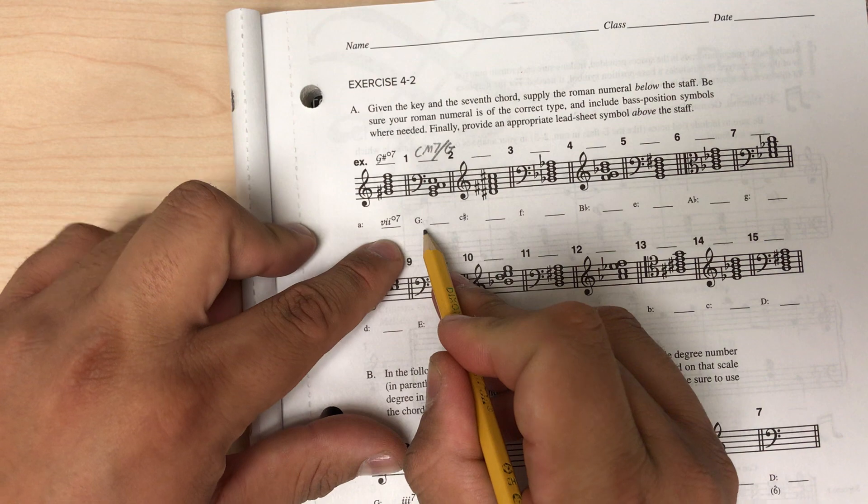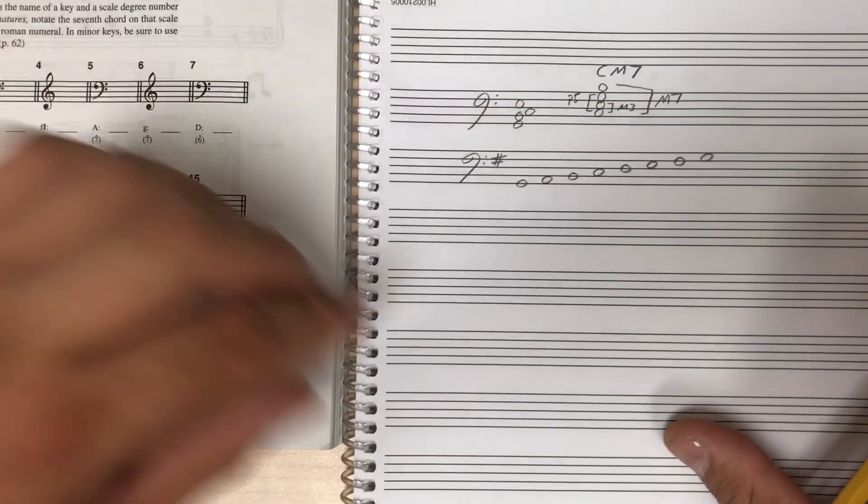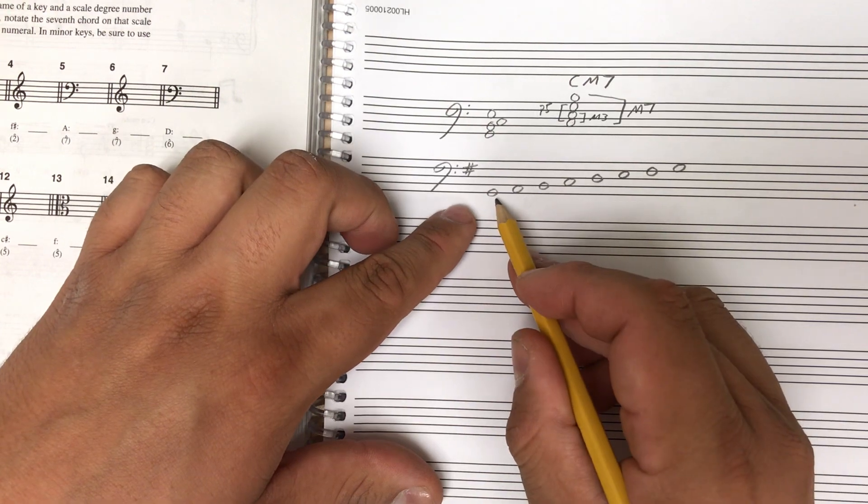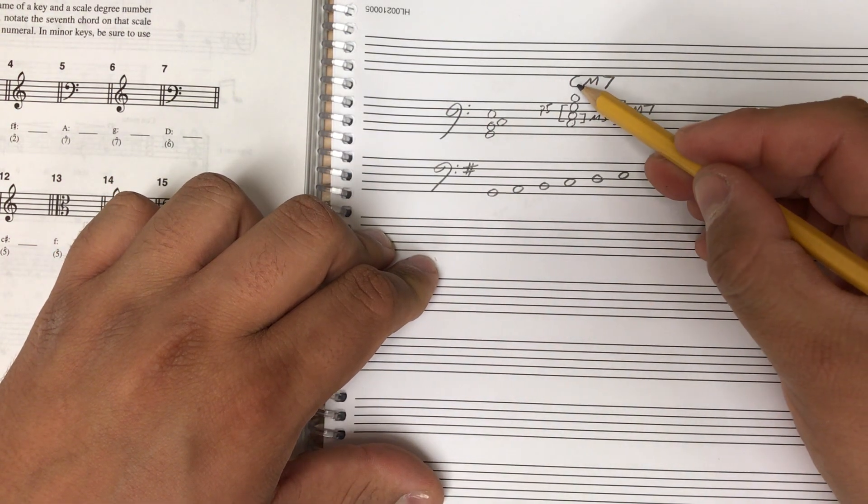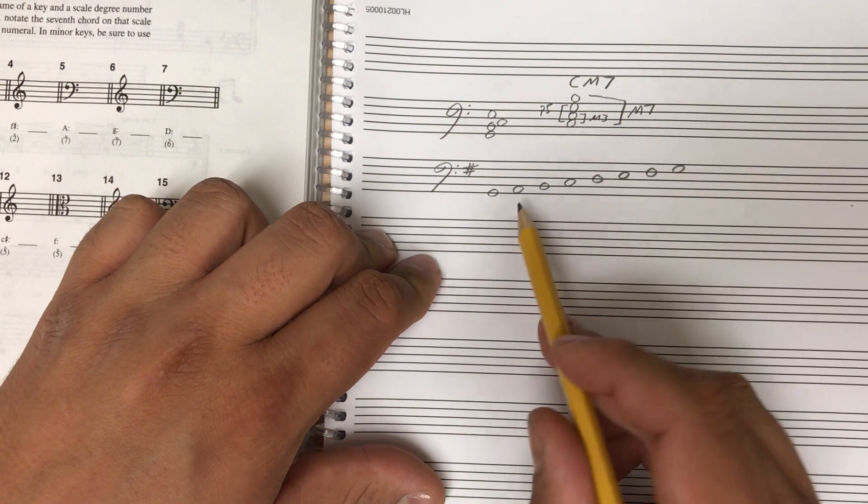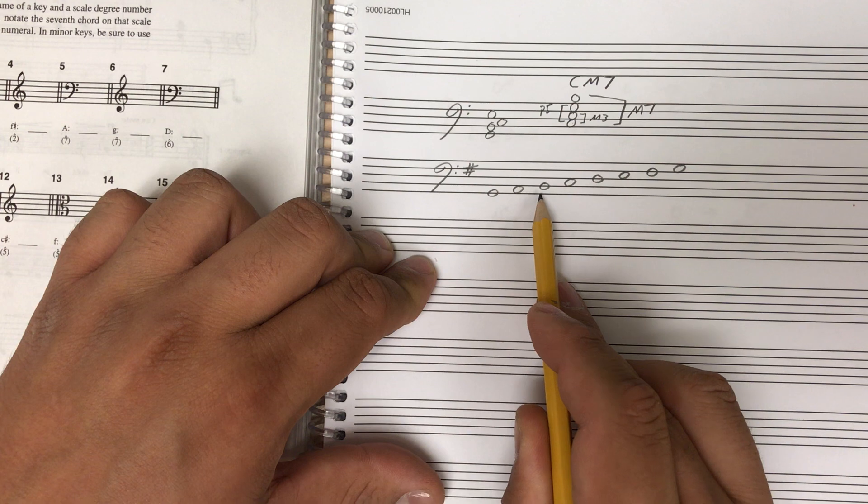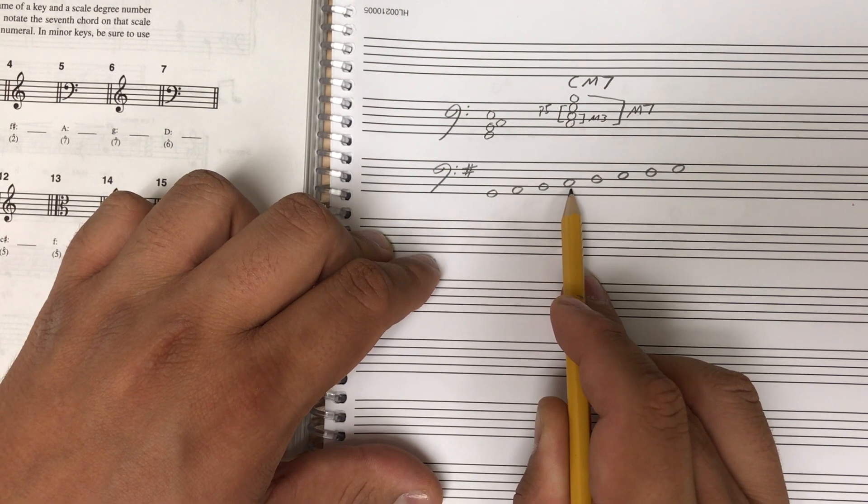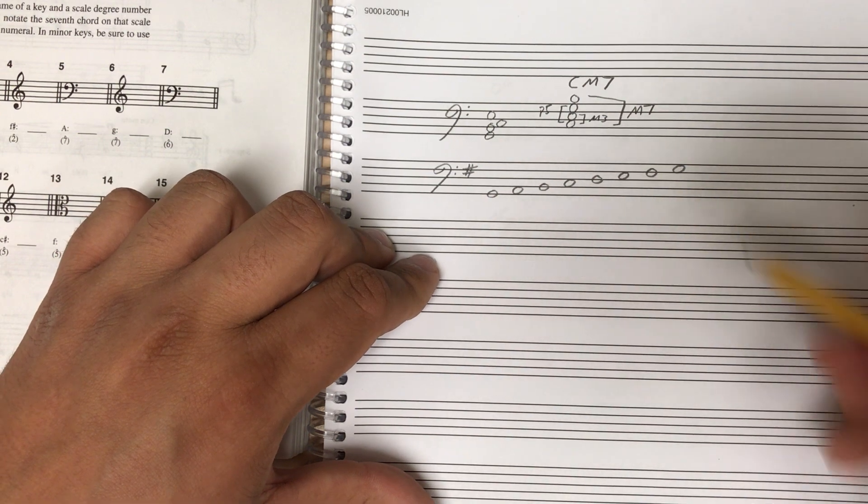Now I have to put it in the context of G major. So just like I did in 4-1 part A, we're in the key of G major. I've written out my G major scale, and I want to figure out where C is in the context of G. So here's C. C is the 1, 2, 3, 4th note in G major. It is the subdominant. So this is the four chord.